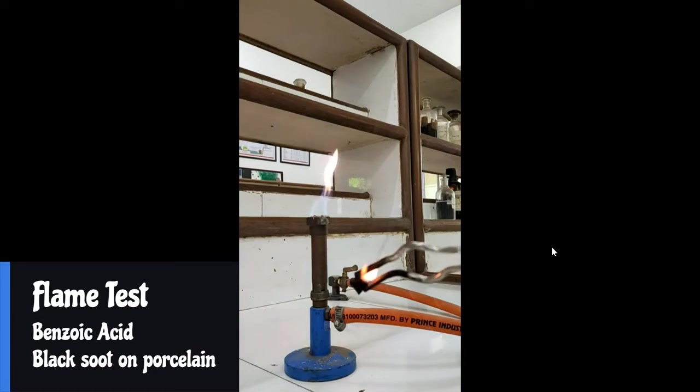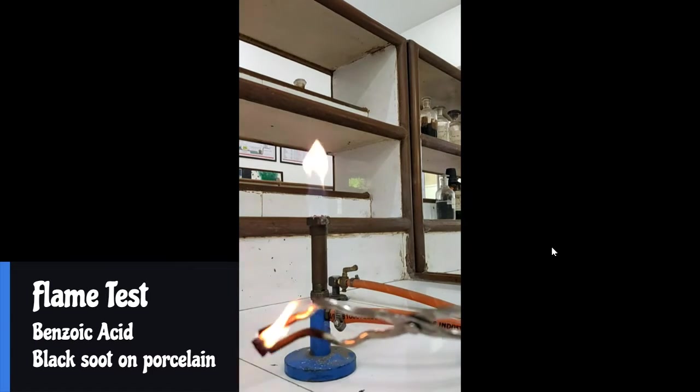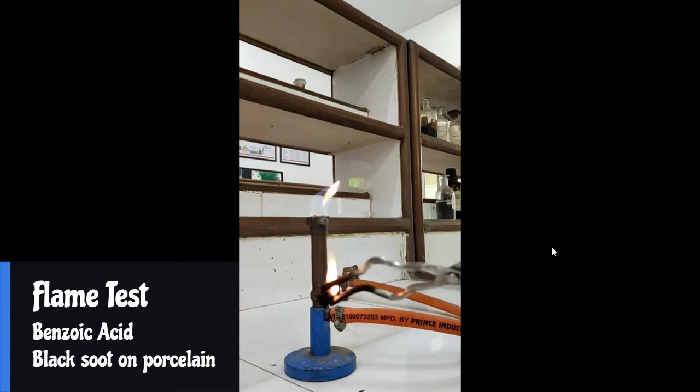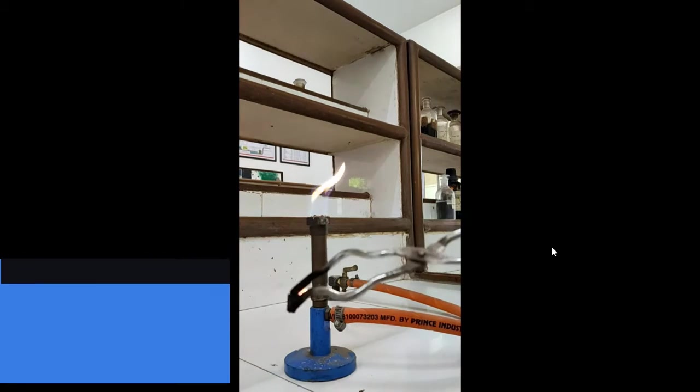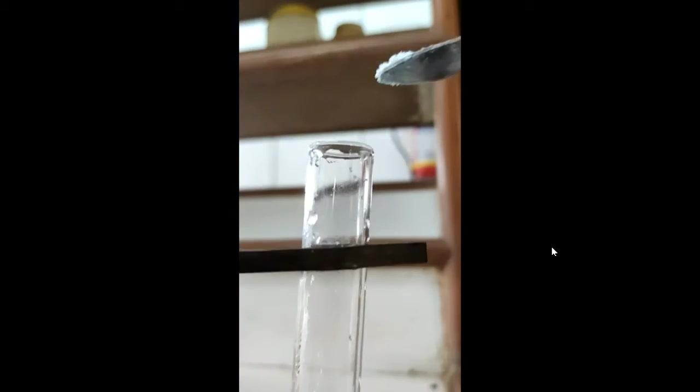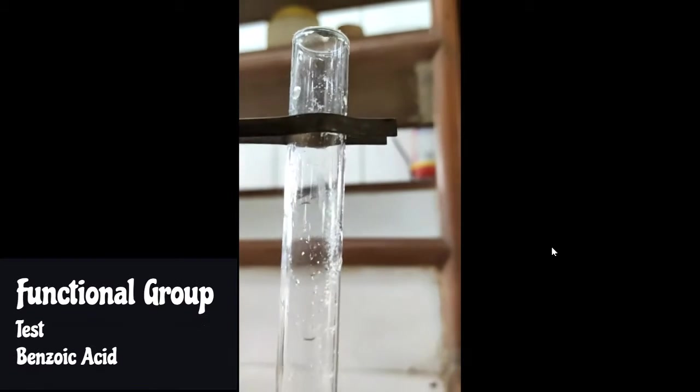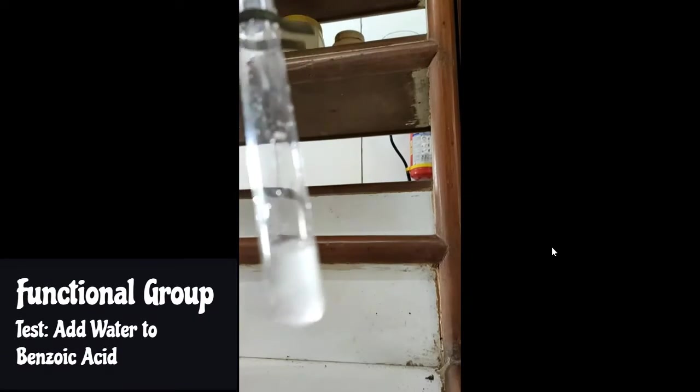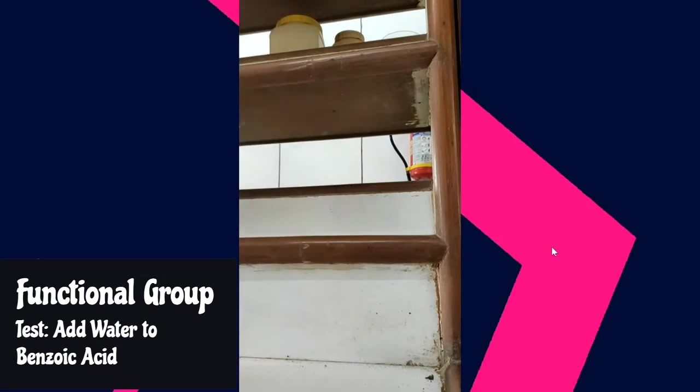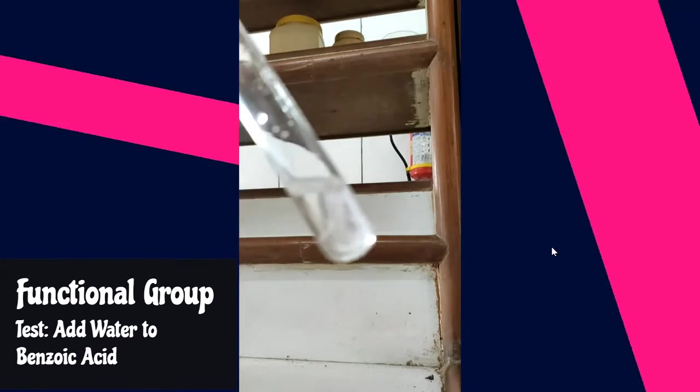That means that the compound is aromatic, so it would be clear that it's not a normal aliphatic compound. Now further, what you can do with respect to the confirmations: take the compound and dissolve it in water. You have to heat it slightly in order to get it dissolved, so just make a clear solution of the compound in water.